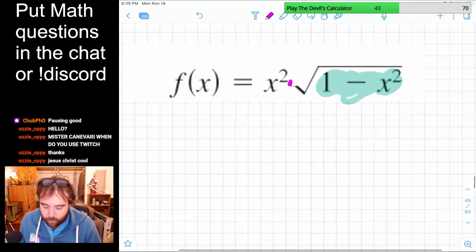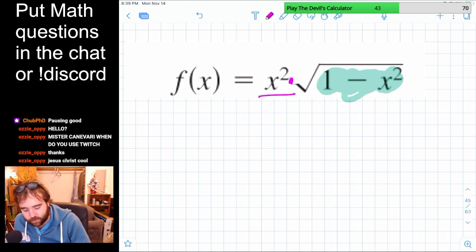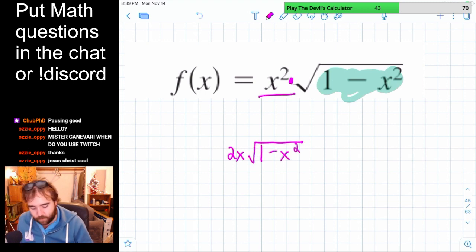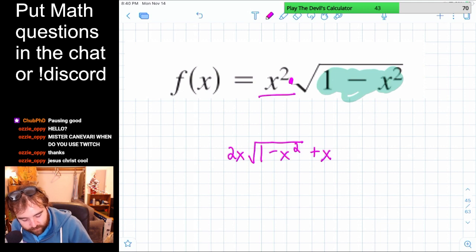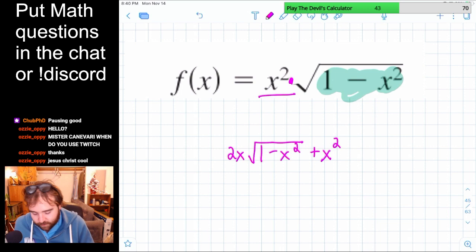So first off, product rule. What are we going to do for product rule? We're going to do the derivative of the first function, so 2x, times just the original function, so times the square root of 1 minus x squared, and then plus the original first function, x squared, times the derivative of the second function.